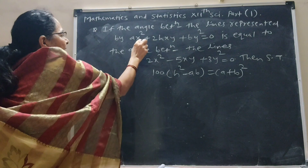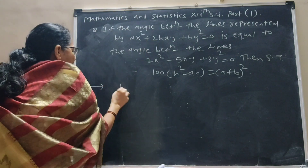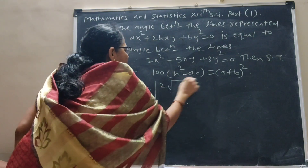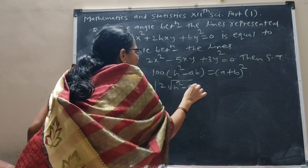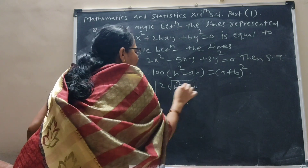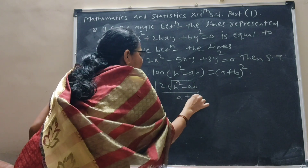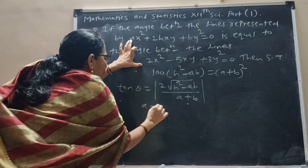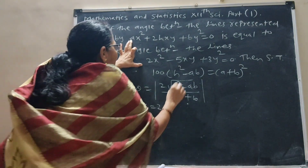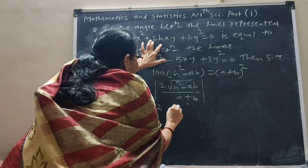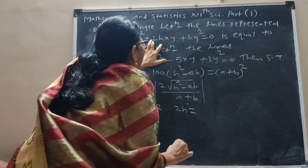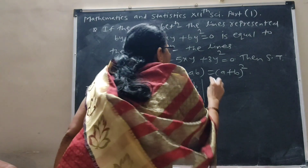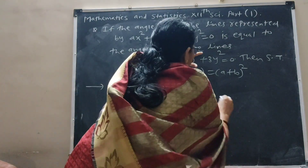The angle between these lines is given by tan θ = 2√(h² − ab) / (a + b). Now compare the second equation: 2h = −5, b = 3, a = 2.